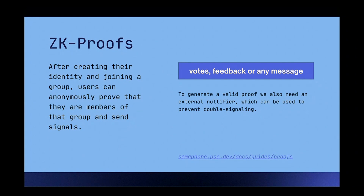For ZK proofs: after you join a group, you can send signals to prove that you are part of the group, and then send signals such as votes, feedback, or any other text message. You also need an external nullifier to prevent double signaling. If you want to send several signals, you will need to use a different external nullifier each time so that multiple signals can be verified.